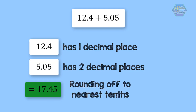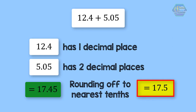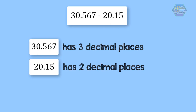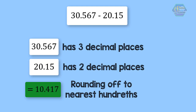So we have 12.4 plus 5.05 equals 17.45, then round off to the nearest tenths, giving us 17.5. Another example: 30.567 minus 20.15. 30.567 has three decimal places while 20.15 has two decimal places. Our answer should be reported to the least number of decimal places, which is two. So 30.567 minus 20.15 equals 10.417, then round off to the nearest hundredths, giving 10.42.